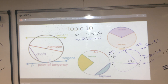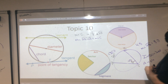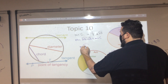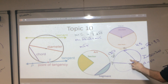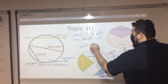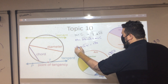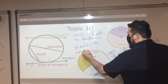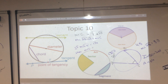Becca, if arc AB is 130 degrees, what is the measure of angle C? 65 — perfect.